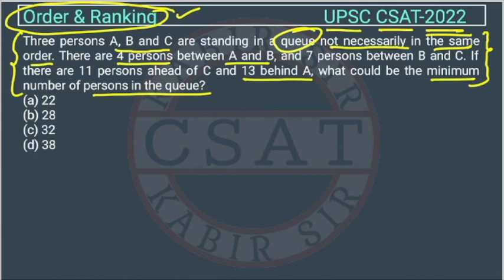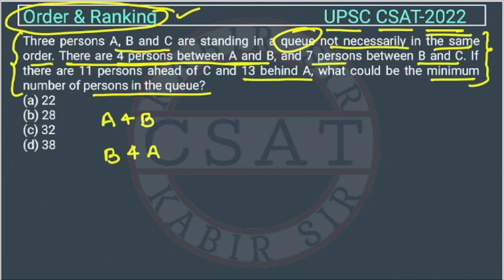The question says there are three persons standing in a queue, not necessarily in the same order. The first statement: there are four persons between A and B. So there are two possibilities — Case 1: A, four persons, B; and Case 2: B, four persons, A.